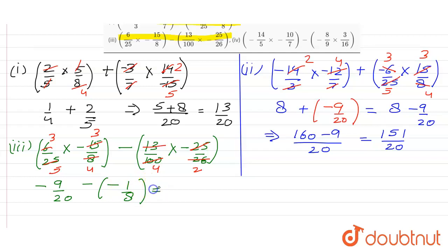After opening the bracket, I'll get minus 9 by 20 plus 1 by 8. So if I solve it further, I can take 40 as a LCM, so I'll get minus 18 plus 5.